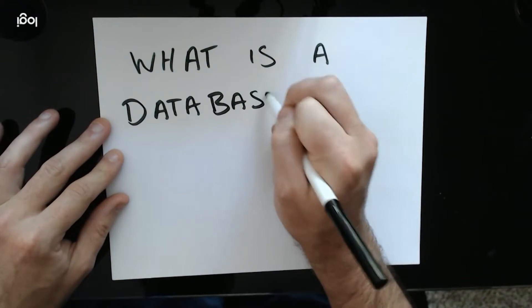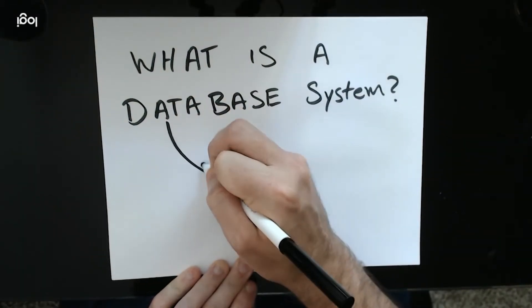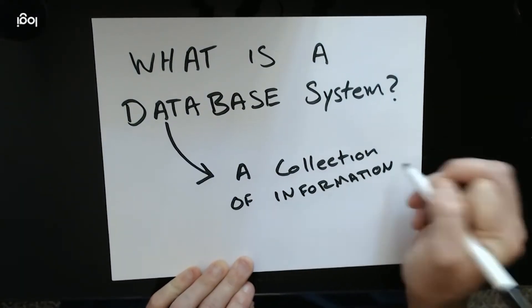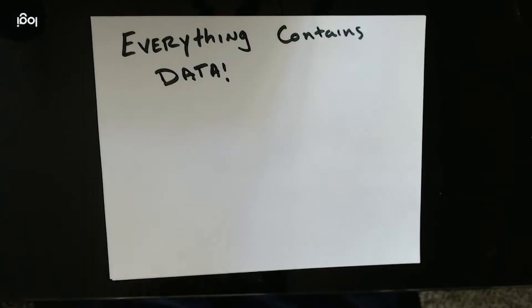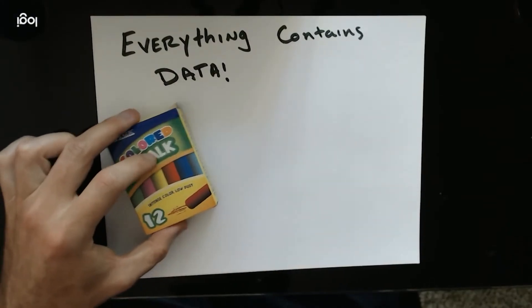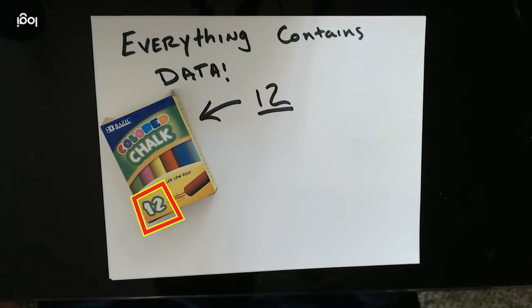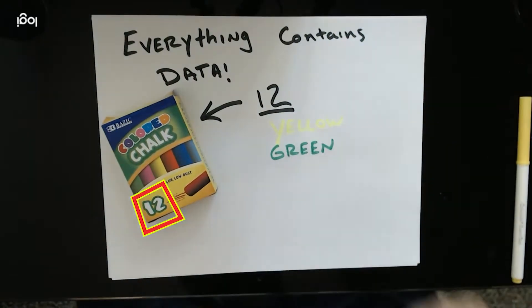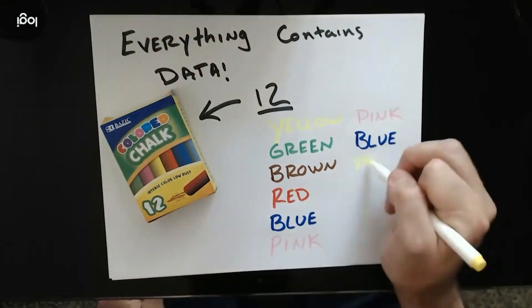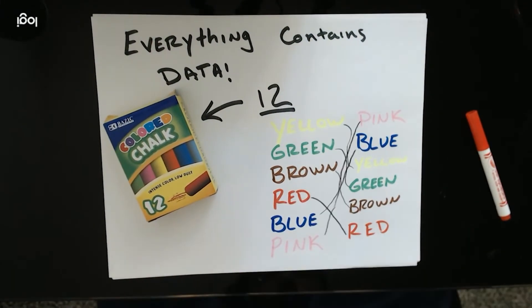What is a database system? Data is nothing more than a collection of information, and everything contains data, like this box of chalk, which we know contains 12 pieces and includes colors like yellow, green, blue, brown, red, pink, and have multiples of each.